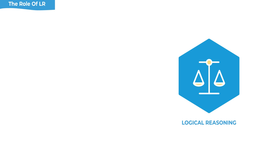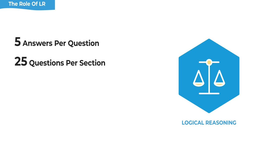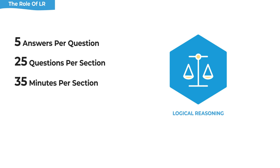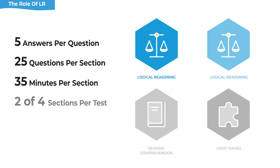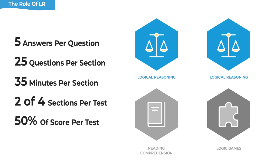Like every question on the LSAT, in logical reasoning there are five multiple choice answers for every question. On average, there are 25 questions per section and each section is 35 minutes. There are a total of four sections that are scored on the LSAT, and two of them are logical reasoning sections, which makes logical reasoning half of your total score.